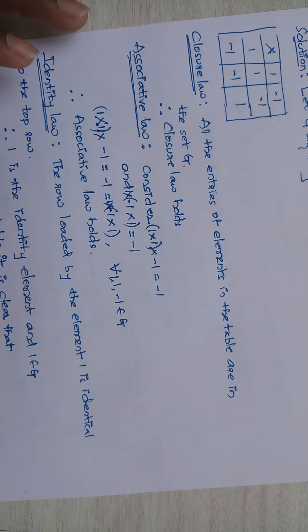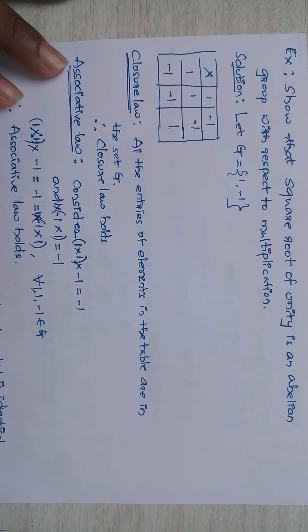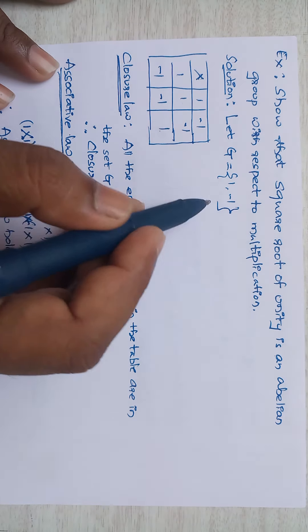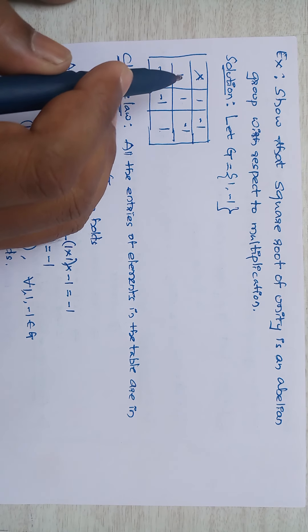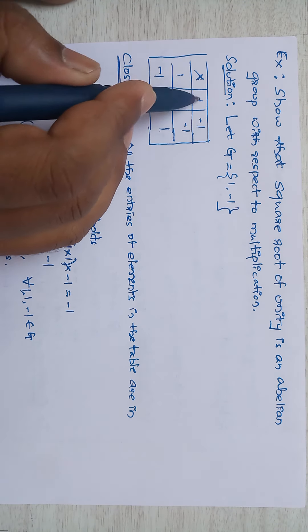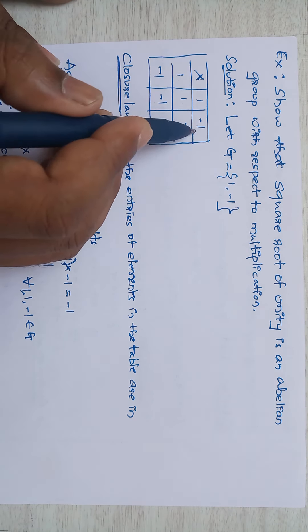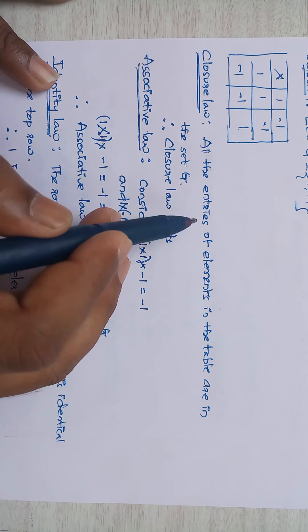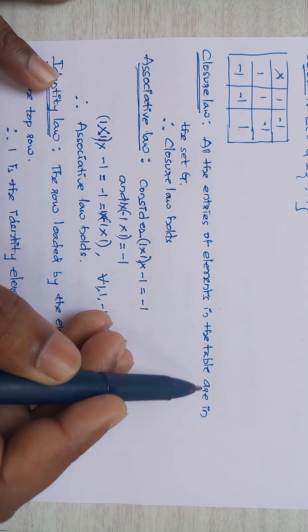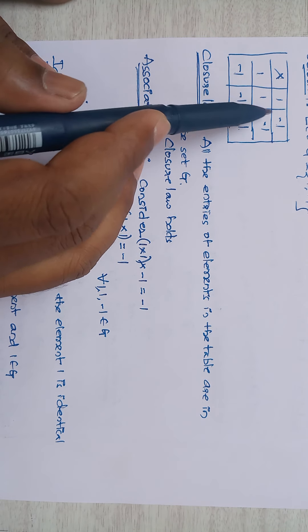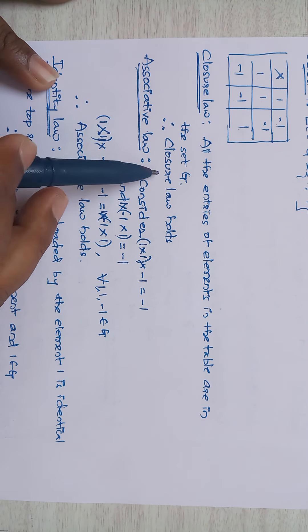Next example: show that the square roots of unity form an abelian group with respect to multiplication. Let G = {1, −1}. Composition table: 1·1 = 1, 1·(−1) = −1, (−1)·1 = −1, (−1)·(−1) = 1. Closure law: all entries in the table belong to G; no other elements exist. Therefore closure law holds.